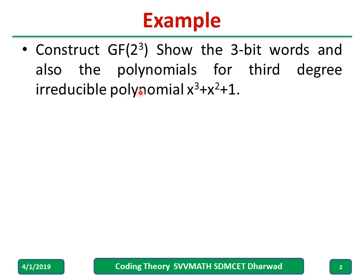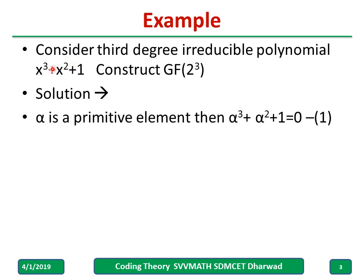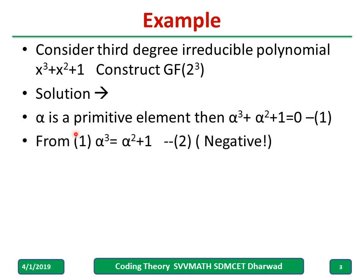The irreducible polynomial is x cubed plus x squared plus 1. Given this polynomial and Galois field 2 raised to 3, and alpha is a primitive element, I can write alpha cubed plus alpha squared plus 1 equal to 0. From this, simply replacing alpha cubed, we get alpha squared plus 1 equal to 0. From equation 1, I can write alpha cubed equal to alpha squared plus 1.